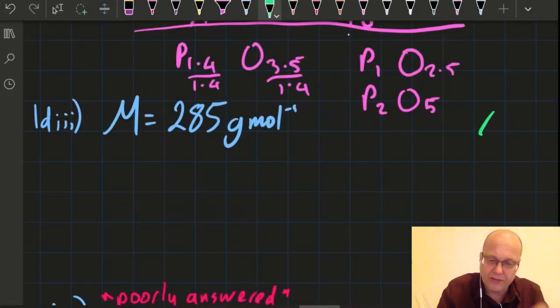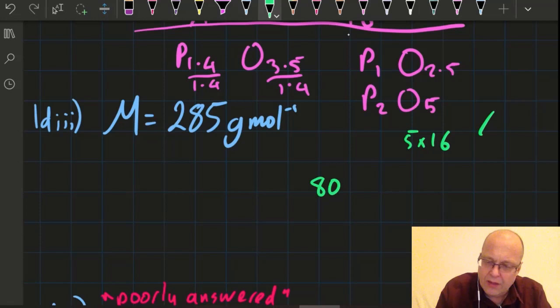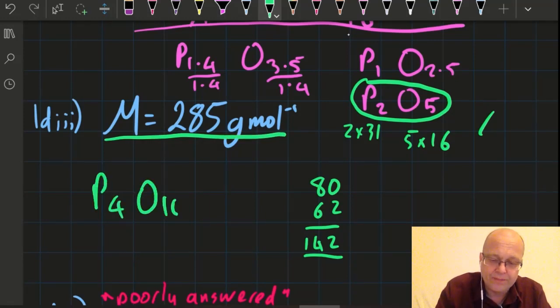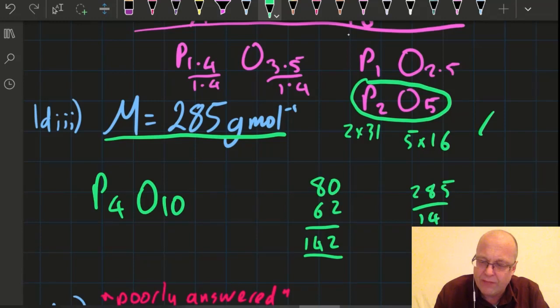So the molecular formula has a molar mass of 285. Let me check the molar mass of my P2O5 empirical formula. I've got 5 times 16, which is 80, and 2 times 31, which is 62. So that's going to give me 142. So it looks like my empirical formula has half the molar mass of the molecular formula. So really it's going to be P4O10. Yeah, that's only worth one point. But if you had to show how you got that point, you'd then do 285 divided by 142 is 2. But it's only worth one point, you just want the answer. Poorly answered the next one.